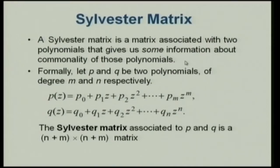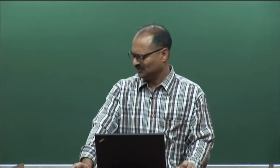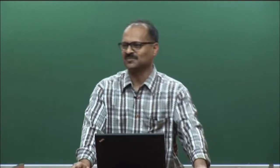There is a concept called the Sylvester matrix, where you make a matrix from the coefficients of two polynomials. Once you form it, it gives you information about the commonality of the polynomials — whether two polynomials have a common factor. Formally, if you have two polynomials p of degree m and q of degree n, you form an (n+m) × (n+m) matrix.